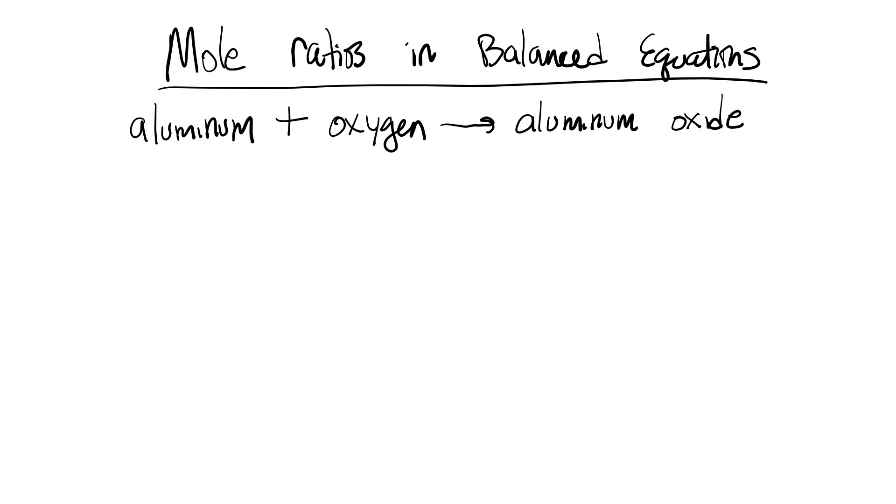So we'll first take all the elements and the compounds and make their formulas or symbols. Aluminum is Al plus oxygen. We're going to leave a space in case we need a coefficient. Oxygen is a diatomic element. Then it's going to make aluminum oxide. And we know that aluminum oxide, the aluminum comes together with oxygen in a 2 to 3 ratio because of the charges on the ions in that compound.